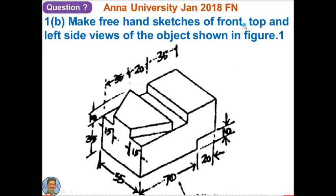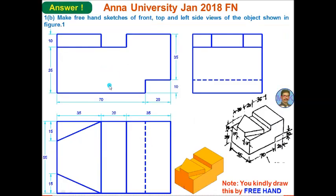Question one B: make freehand sketches of the front, top, and left side views of the object shown in the figure. For this, you know the standard procedure of getting three orthographic views from a given isometric or pictorial view. This is the view direction for the front, this area is for the top, and this area is for the left side. As per first angle projection, the left side view comes to the right of the front view. Pause the video, see the question and the solid model, and match it with the three orthographic views.